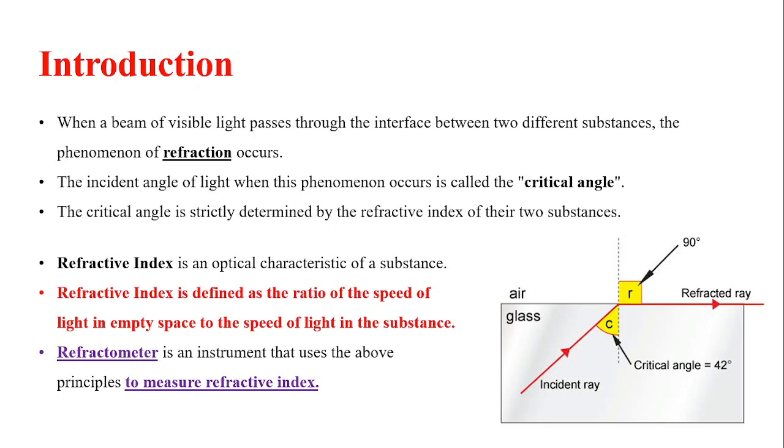First, let us see what is refraction. When a beam of light passes through the interface between two different substances, the phenomenon of refraction occurs. The incident angle of light with which that light falls on the specimen is called the critical angle. The critical angle is strictly determined by the refractive index of the two substances.